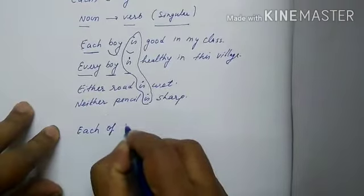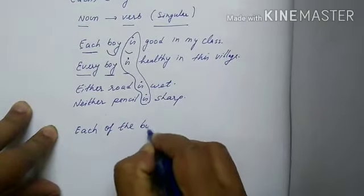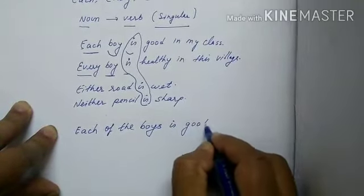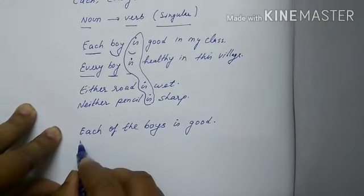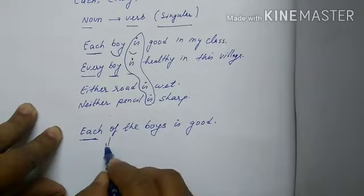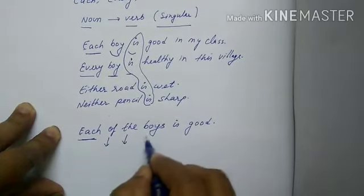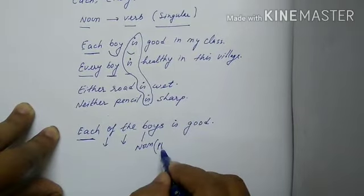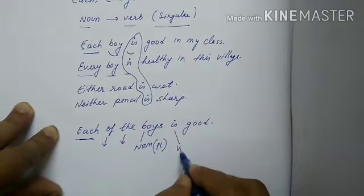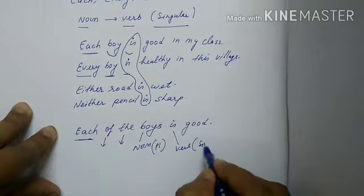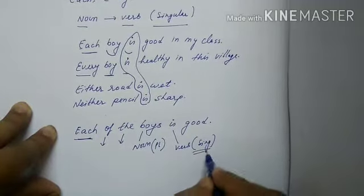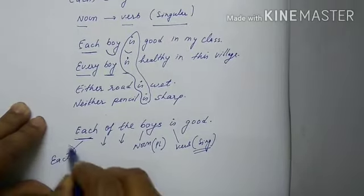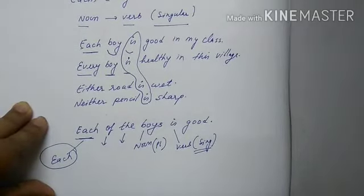For example: 'Each of the boys is good.' Notice the difference — after 'each', when 'of' is used, I have used 'boys' — the noun has become plural. But the verb 'is' is in singular form, because the subject of the sentence is still 'each.'